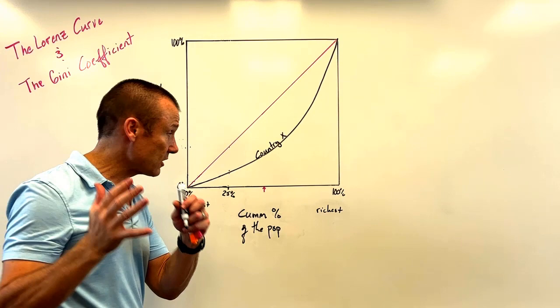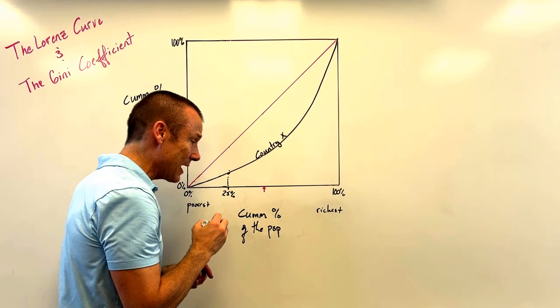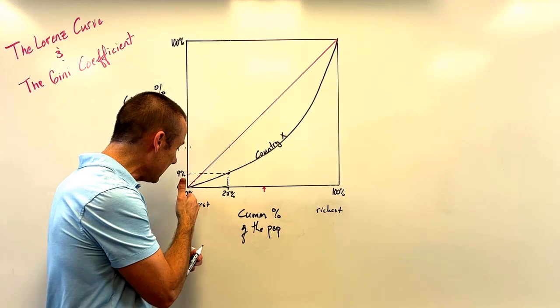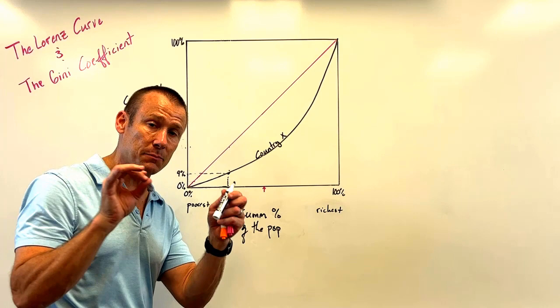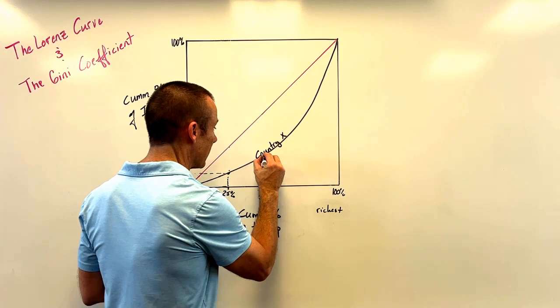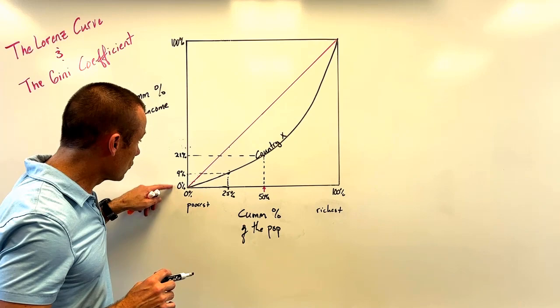Now let's focus on an actual Lorenz curve — the black line. At 25 percent of the population, drawing up to the black Lorenz curve and over to the vertical axis gives about 9 percent. That means the poorest 25 percent of the population are only earning 9 percent of the income. Going out to 50 percent and drawing up to the Lorenz curve gives about 21 percent — the poorest 50 percent earning 21 percent of income.